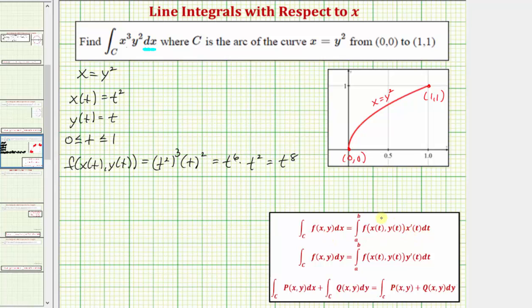Notice how we also need to find x prime of t. Well if x(t) equals t squared, x prime of t is equal to 2t. And now we have all the information we need in order to evaluate the given line integral.